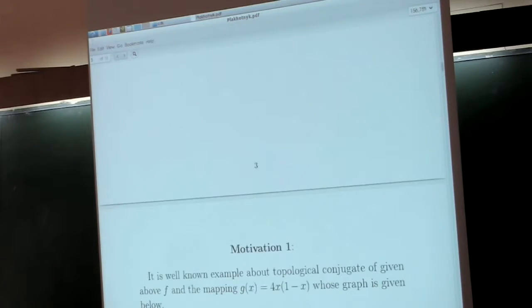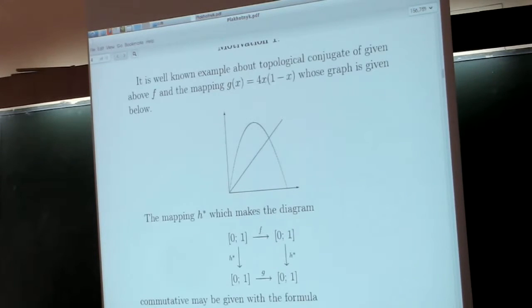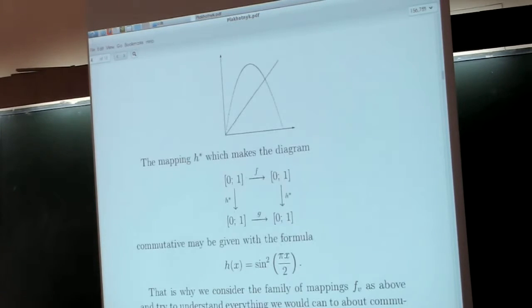As part of motivation, it's known that our tent map f is topologically conjugated with the logistic map, and corresponding mapping is also smooth. It's natural to ask what will happen if we change that parabola to a piecewise linear map. That is what we are doing.